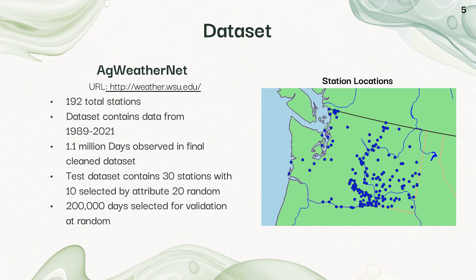I then took out 30 test stations, which were selected to bias the model against itself by some location attributes, and then about 200,000 days were selected for validation just at random.